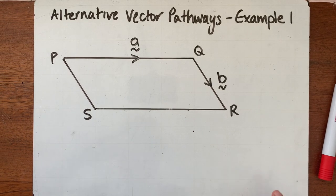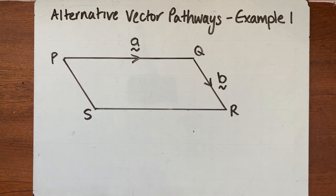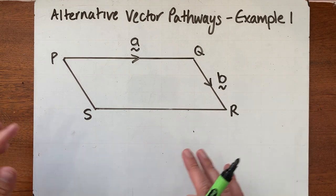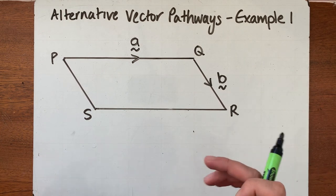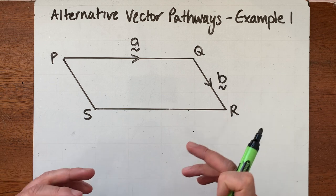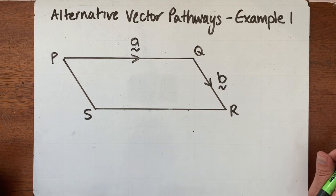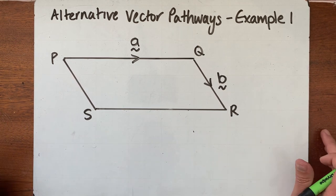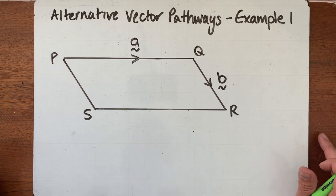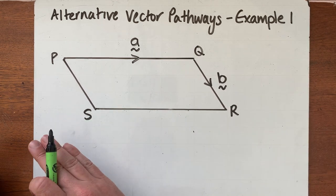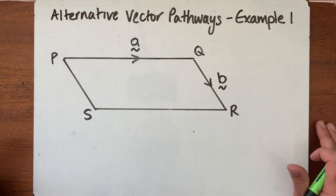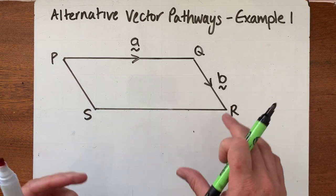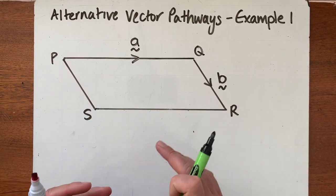Hi everyone, welcome to this little video on alternative vector pathways. This is always one of those bits of vectors that can be a bit tricky to get your head around initially, but once you see it, it's very straightforward. I'm going to talk to you about what an alternative vector pathway is, and we're going to do two examples with a few questions and pointers around each.